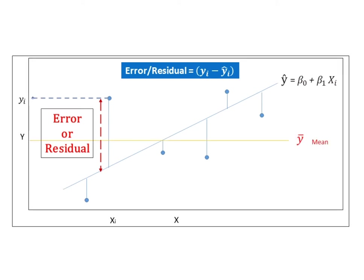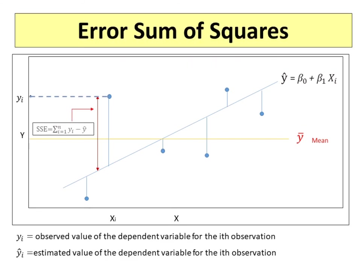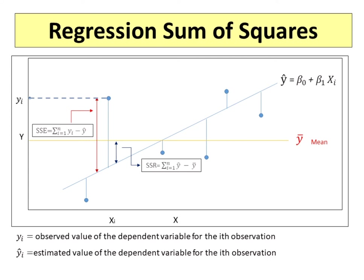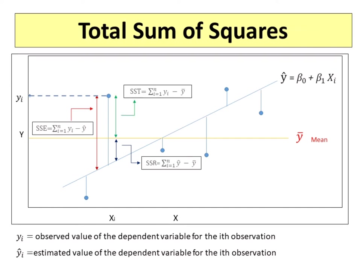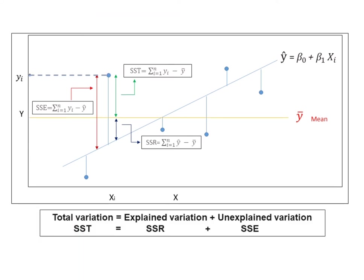Let's draw a line of y-bar to explain the error sum of squares, regression sum of squares, and total sum of squares. The error sum of squares, or SSE, is the difference between the response value and the predicted value. The regression sum of squares, or SSR, is the difference between the predicted value and the overall mean response. The total sum of squares, or SST, is the difference between the response value and the overall mean response. The total variation consists of two components: regression sum of squares and error sum of squares. Mathematically, SST equals SSR plus SSE.